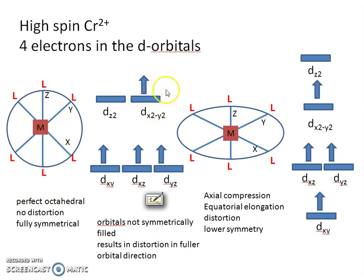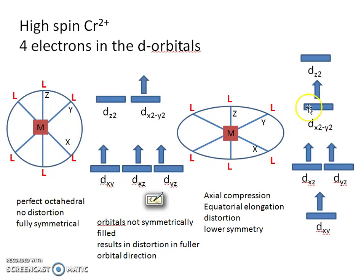The fullest orbital has the most repulsion, so in the x-y direction there is greater repulsion. Since these ligands have moved further away, the orbitals containing x and y have lower energy. The dx²-y² orbital now has a lower energy, and the three t₂g orbitals that were degenerate in the undistorted complex are now split, with the orbitals containing x and y having lower energy.